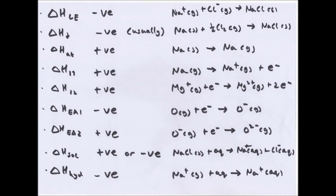Second ionization energy is when an atom loses a second electron. In this case, magnesium has already lost one electron, then loses another to become Mg²⁺ plus 2e−. Make sure the charge is balanced.